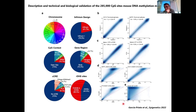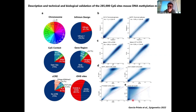If you do a DNMT knockout, you see very massive hypomethylation. Remember, the drug has a weaker effect, while the genetic disruption has a more massive effect, creating this widespread loss of DNA methylation.